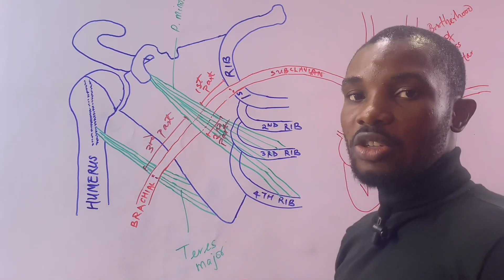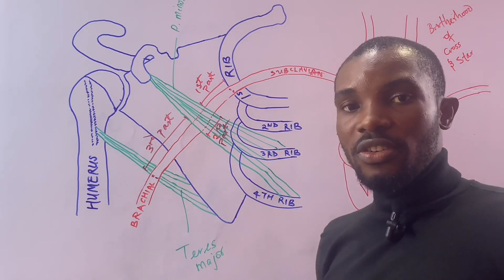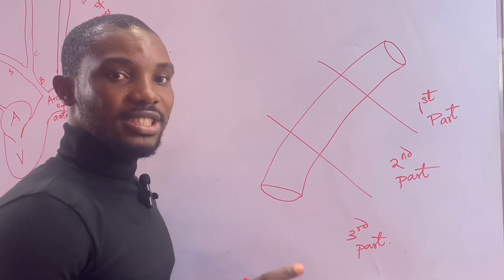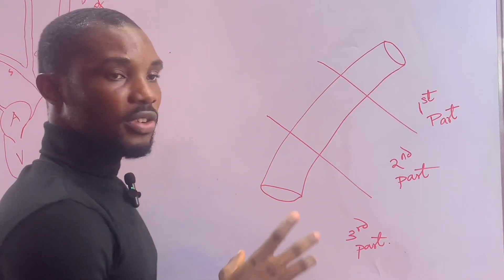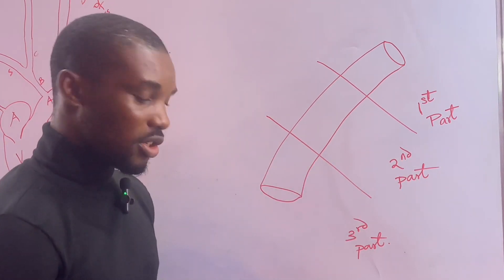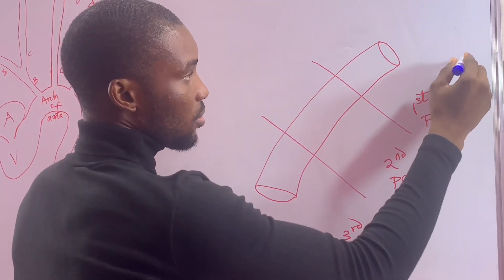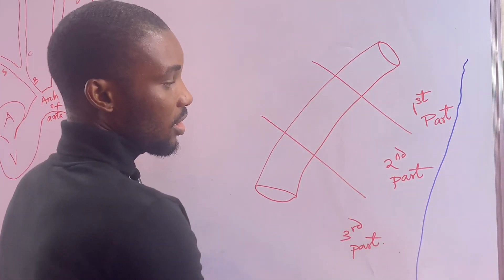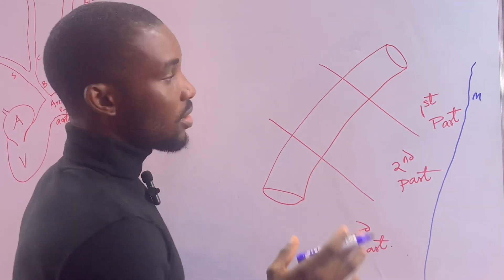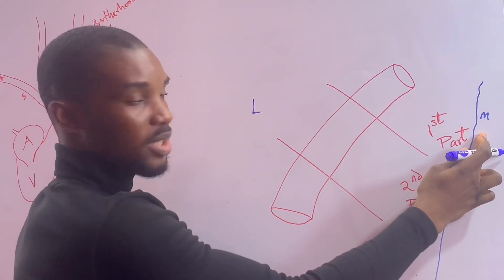Now let's look at the relations — important structures around the axillary artery, including nerves and blood vessels. Getting the orientation clear: the chest wall is medially, so this is the medial aspect, and this is the lateral aspect.